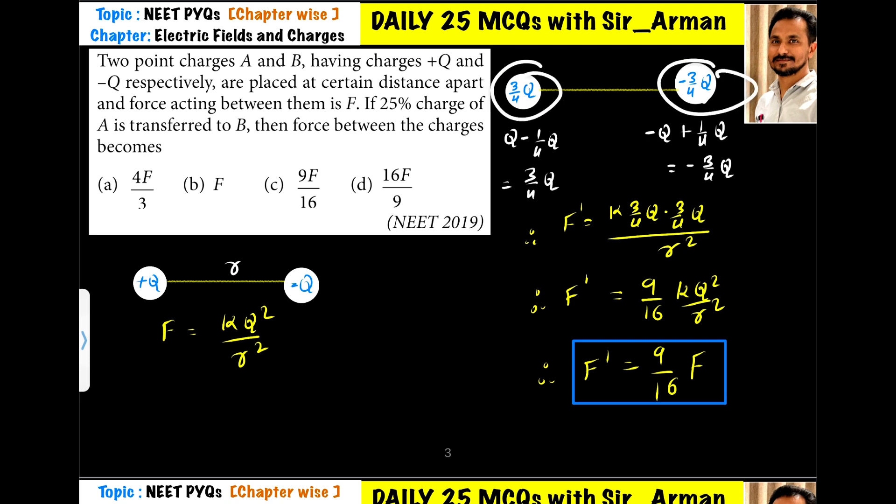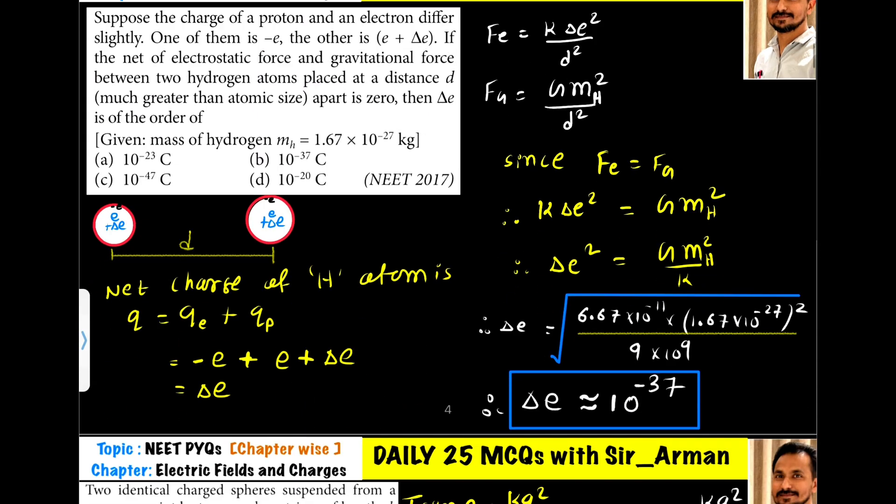...is F' = kQ₁Q₂/r². So k times Q₁ times Q₂ by r²: 3×3 is 9 and 4×4 is 16, so it is 9/16 kQ²/r². That is, the new force between them is 9/16 of the original force.